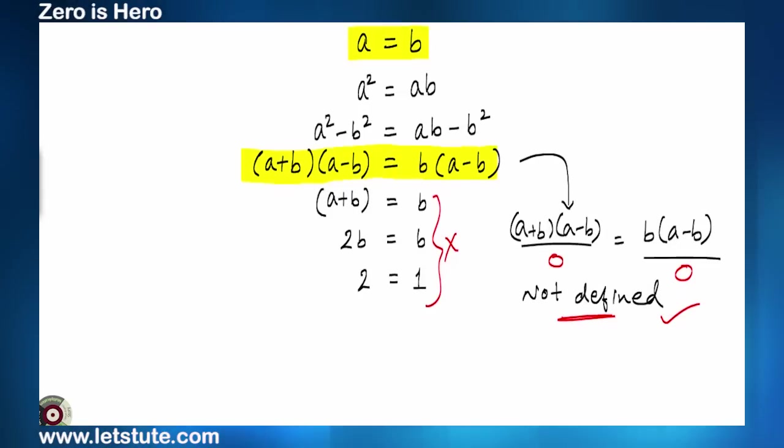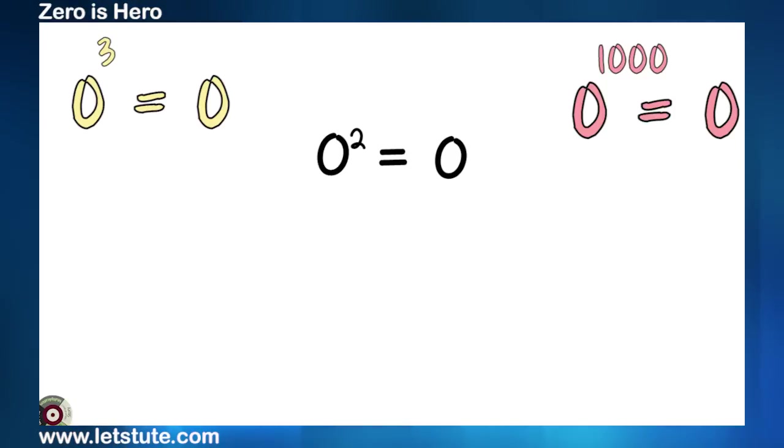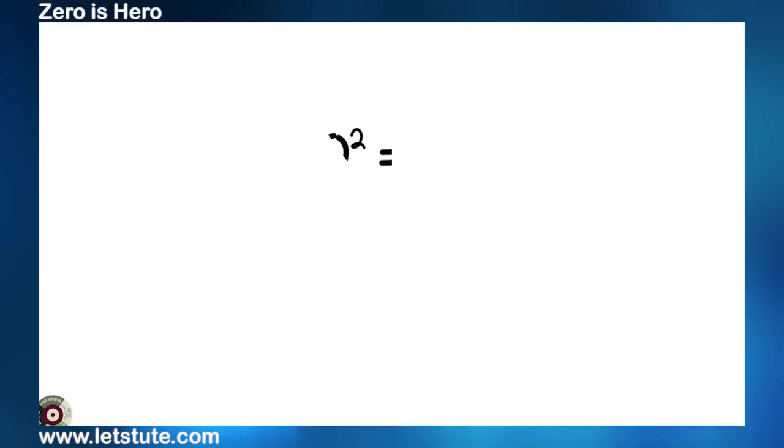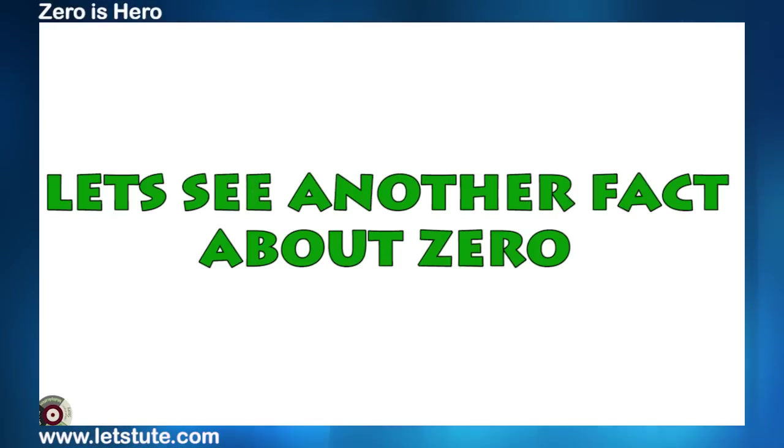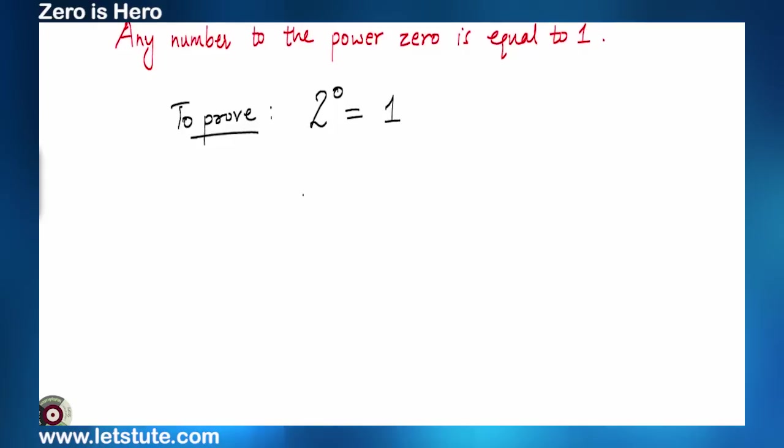We saw that 0 square is 0 which is true for any power of 0. So, keeping this knowledge in mind, let's see one more fact about 0. That is, any number to the power 0 is always equal to 1. Let us justify this with an example. Take any random number, I'll take 2. So, 2 raised to 0 should be 1, right?